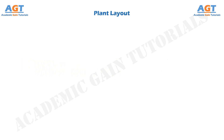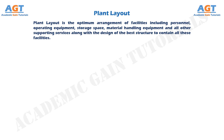Plant layout. Plant layout is the optimum arrangement of facilities including personnel, operating equipment, storage space, material handling equipment and all other supporting services, along with the design of the best structure to contain all these facilities. Now, let's look at the principles of plant layout that are followed in general.